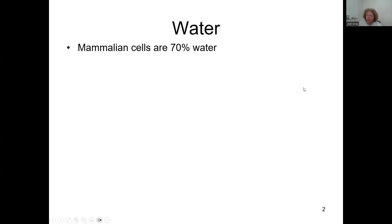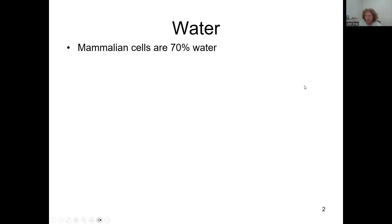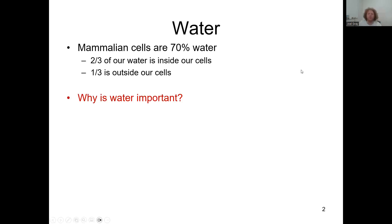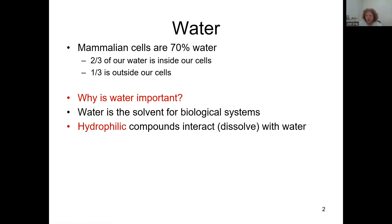So, water. Mammalian cells are about 70% water. The earth is about 75% covered in water. Two-thirds of our water is inside our cells, and one-third is outside. Why is water important? Water is a solvent for biological systems. Hydrophilic compounds interact with and dissolve in water. Your polar and ionic compounds are substances that dissolve really well in water.